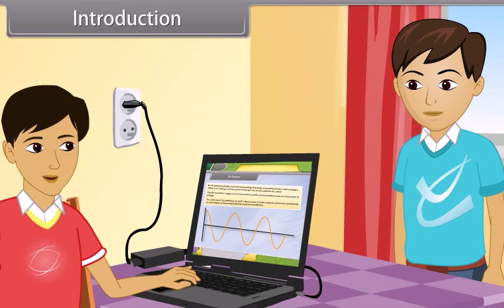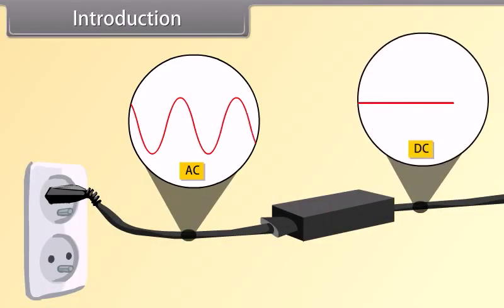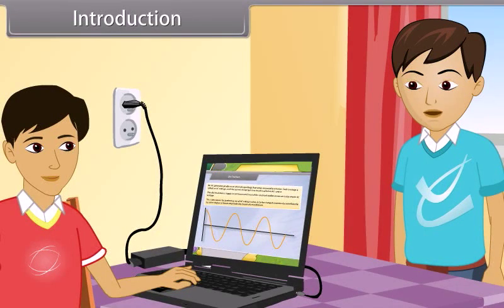Hmm, I really don't know about that. Okay, let me tell you that laptops and many appliances also work on DC voltage. When the charger is plugged into AC supply, the charger converts the AC voltage into DC voltage so that the appliances can work smoothly. Okay, I got it. It's interesting. Tell me more about it.